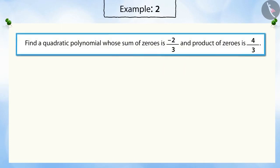Find a quadratic polynomial whose sum of zeros is -2/3 and product of zeros is 4/3.